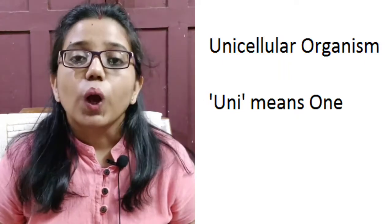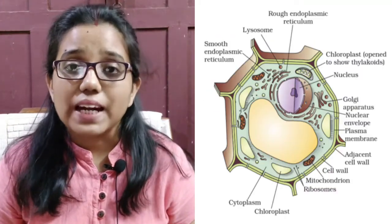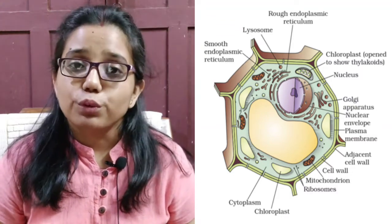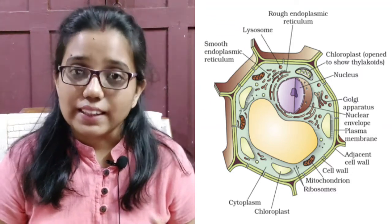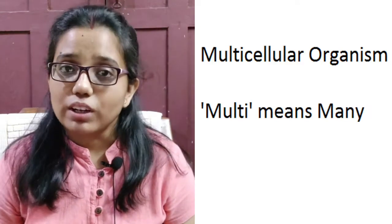Uni means one. On the other hand, in different plants and animals, many cells group together to form a single body. And these are called multicellular organisms.